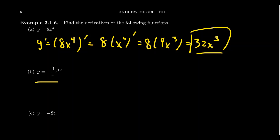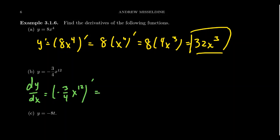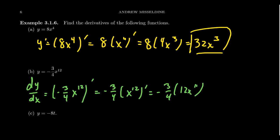How about y equals negative three-quarters times x to the twelfth? When we calculate dy/dx, we pull out the coefficient negative three-fourths, then take the derivative of x to the twelfth by the power rule, giving 12x to the eleventh. Since 4 goes into 12 three times, we get negative 3 times positive 3, ending up with negative 9x to the eleventh.